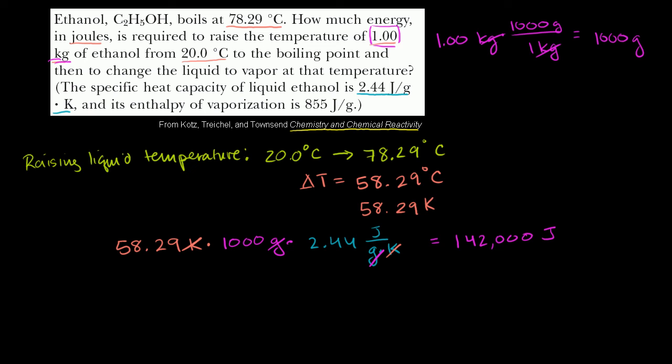So this is going to be 142,000 joules. Joules is our units. We want energy. So this is how much. So this right here is the amount of energy to take our ethanol, our 1 kilogram of ethanol, from 20 degrees Celsius to 78.29 degrees Celsius.